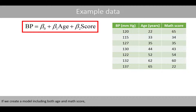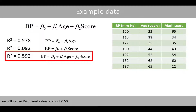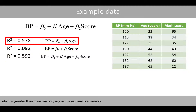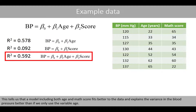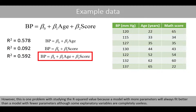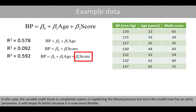If we create a model including both age and math score, we will get an R-squared value of about 0.59, which is greater than if we use only age as the explanatory variable. This tells us that a model including both variables fits better to the data. However, this is a problem when comparing models using the R-squared value, because a model with more parameters will always fit better than a model with fewer parameters, although some explanatory variables are completely useless. The variable math score is completely useless in explaining the blood pressure, but since the model now has an extra parameter, it will simply fit better because it is more flexible.